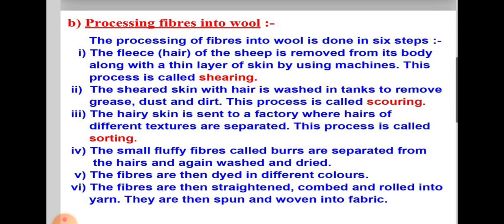The second step is scouring. The fleece of sheep contains dust, dirt, dried sweat, and grease. So the fleece must be cleaned before it can be processed into wool yarn. The fleece is thoroughly cleaned by washing with soap, detergent, and water in tanks. This process of washing the fleece to remove dust, dirt, dried sweat, and grease is called scouring. Scouring makes the fleece of sheep clean.